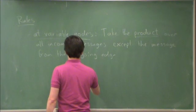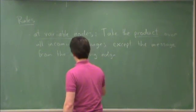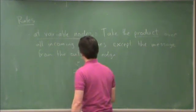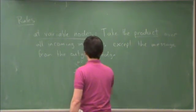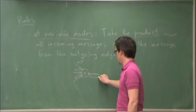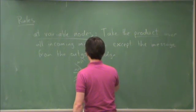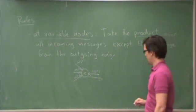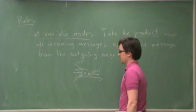In other words, if this is my variable x, and I have messages coming in, let's call them u1, u2, u3, all of these are functions of x incidentally. Here is the edge. I want to send a message along this edge, but there is an incoming message along that edge that I'm going to call u4. What I do is if I want to send a message along this edge, I ignore u4 and I take the product of the others.